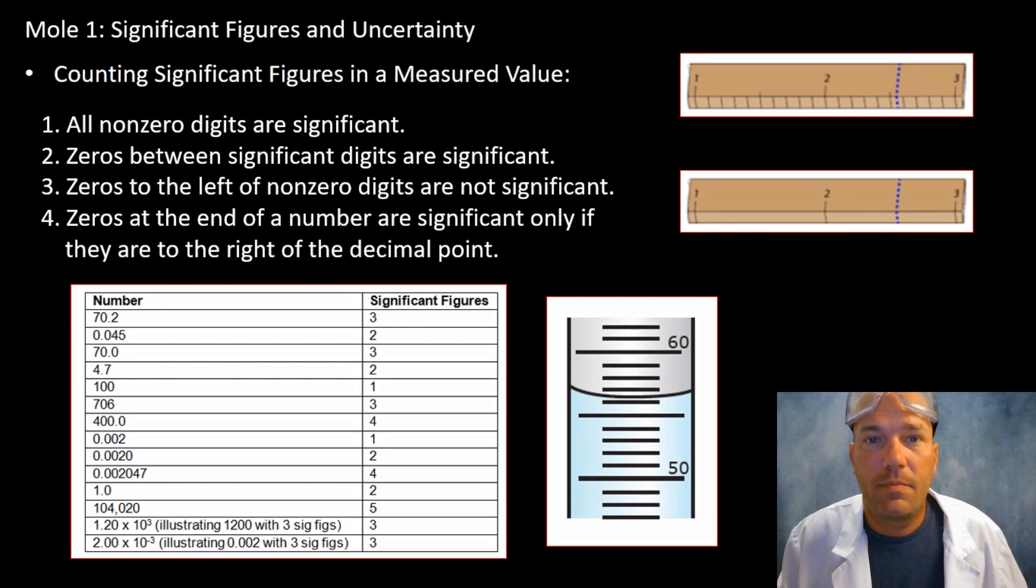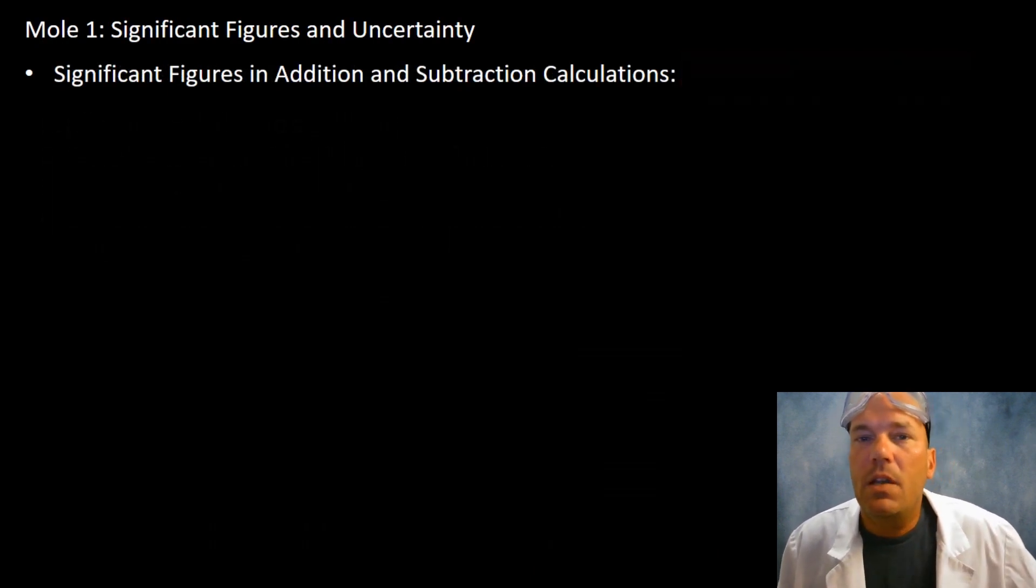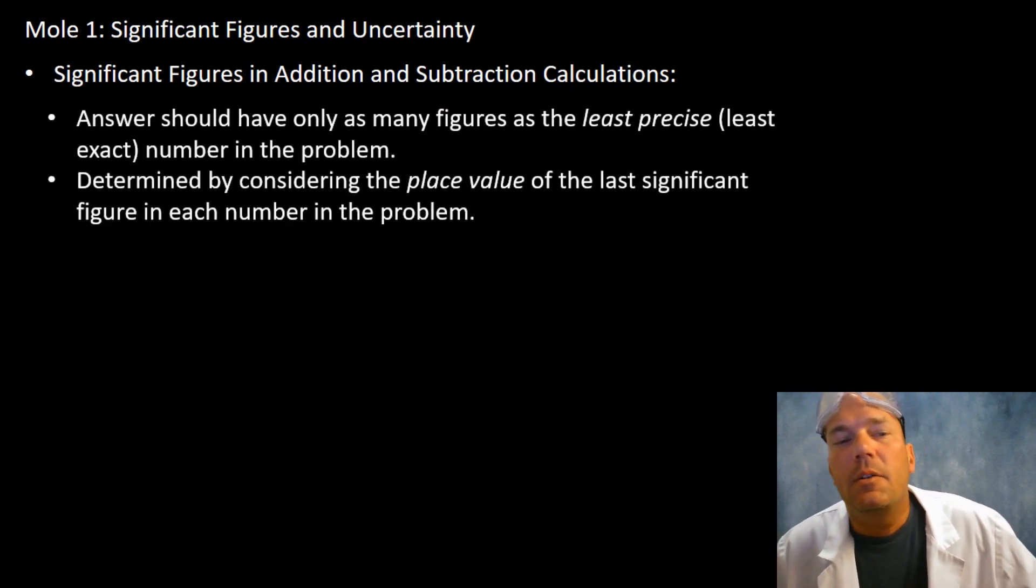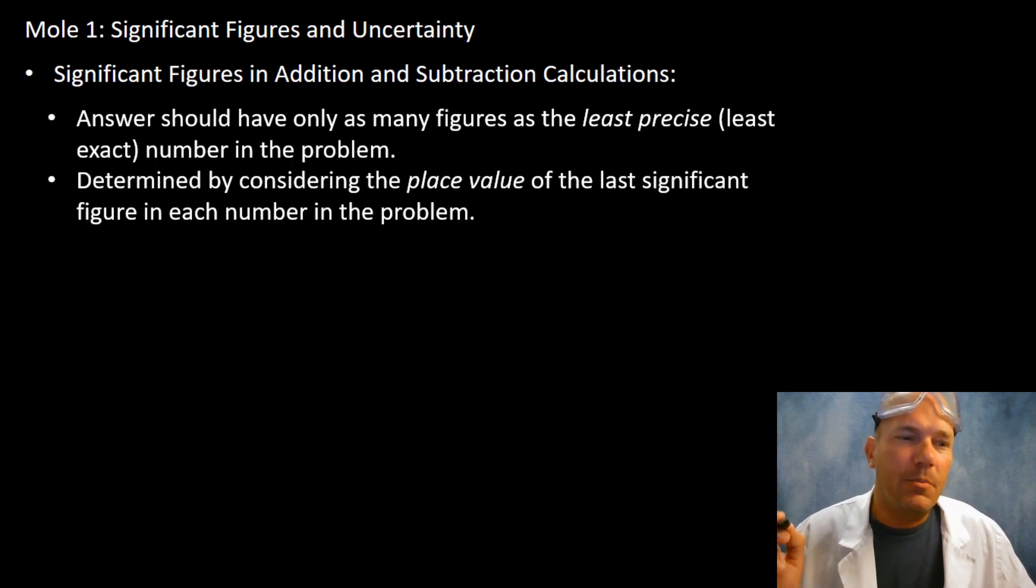Some rules when dealing with addition, subtraction, multiplication and division. For adding and subtracting, your answer should only have as many figures as the least exact number in the problem. You need to know your sig fig rules one through four that we've already discussed. This can be determined by considering the place value of the least significant number in the problem.